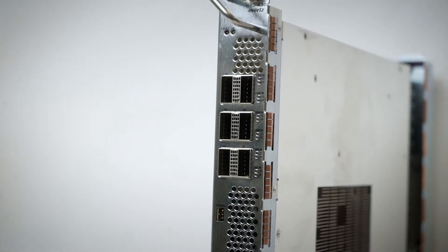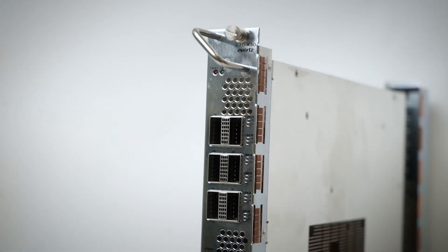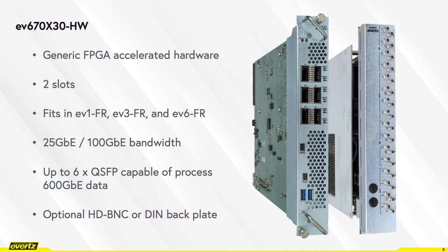The EV670X30 is our generic FPGA accelerated hardware. It is a two-slot card which goes into our EV1FR, EV3FR, or EV6FR. The internet bandwidth could be 25 gig or 100 gig. It has up to six QSFP ports.